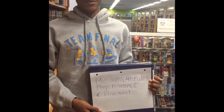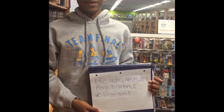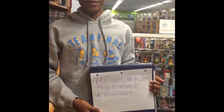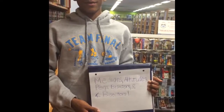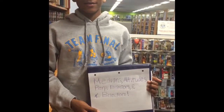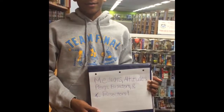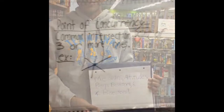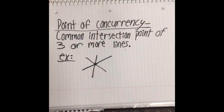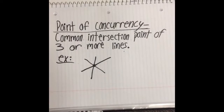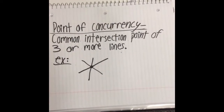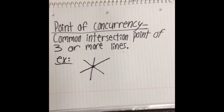Today we're going to be talking about medians, altitudes, perpendicular bisectors, and angle bisectors of triangles. The point of concurrency is the common intersection point of three or more lines.